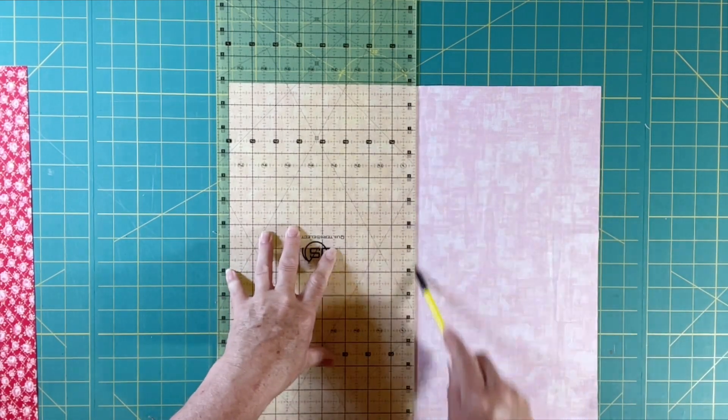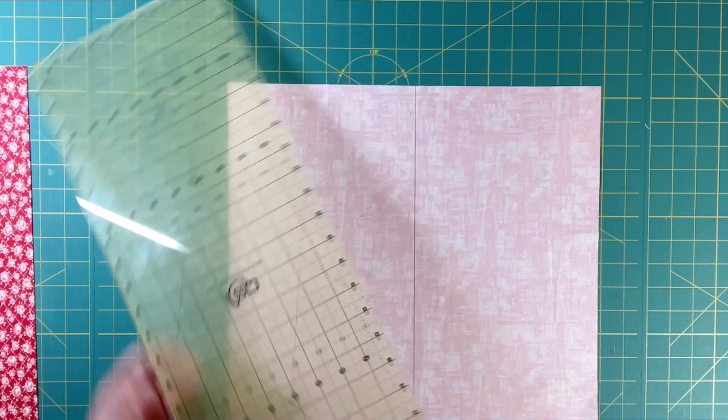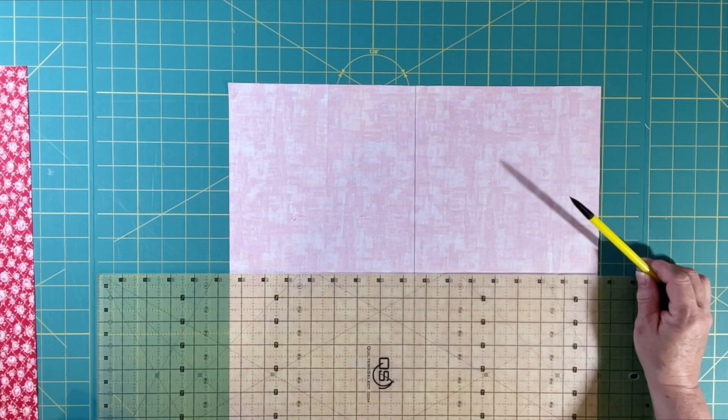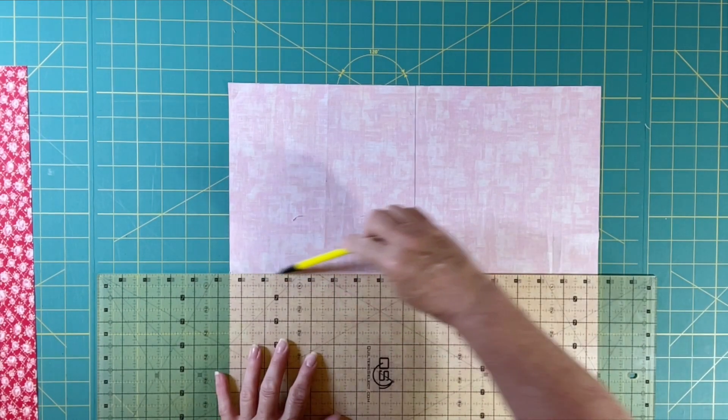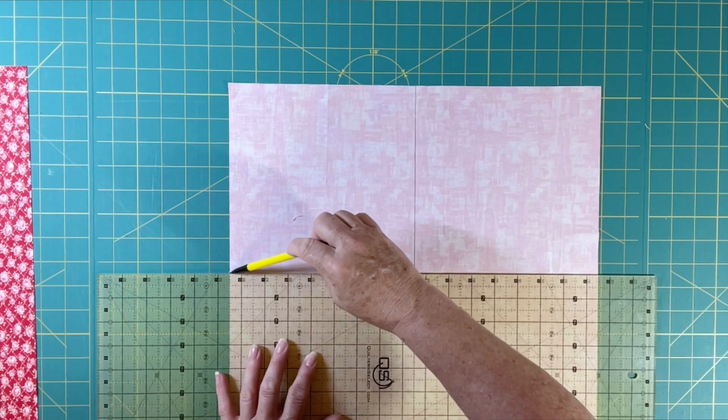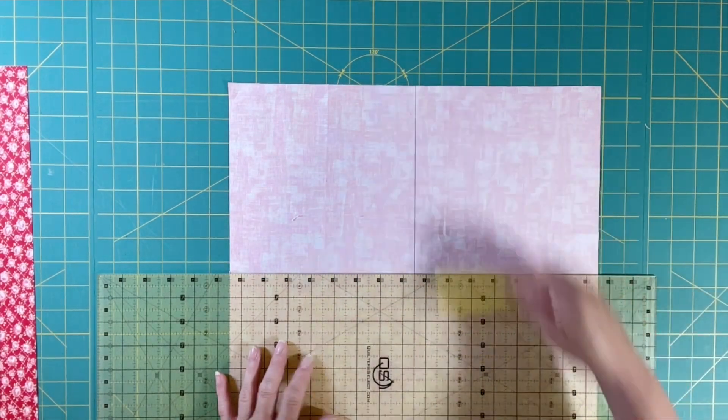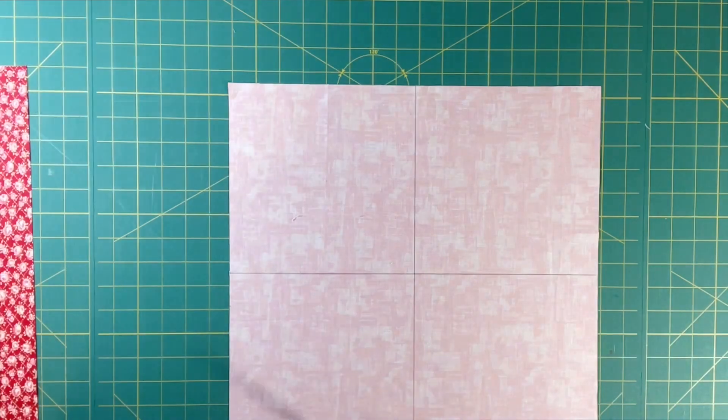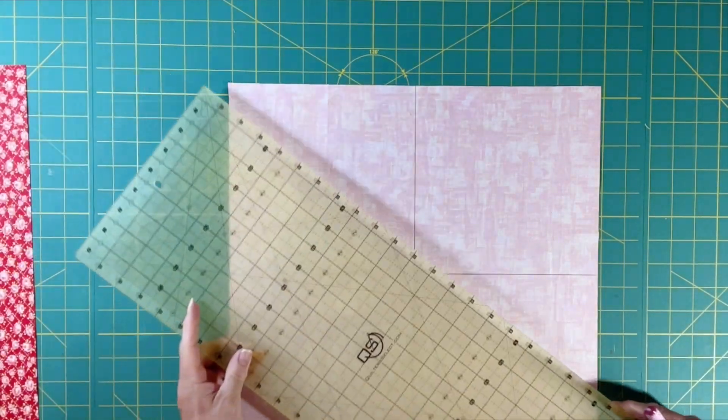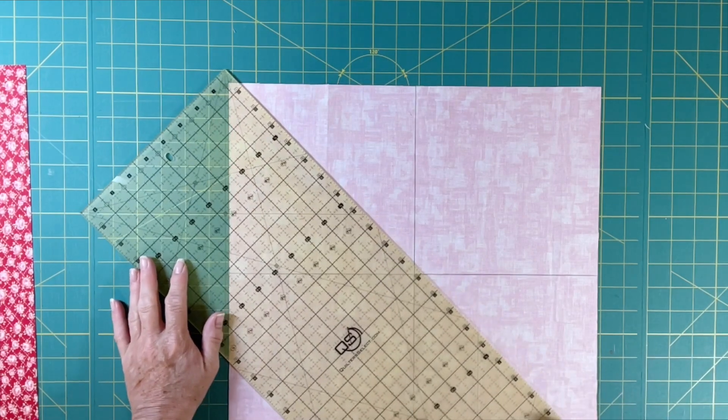These two markings are going to be a different color from the rest of them. So you have one horizontal right through the center at the eight inch mark and one vertical. The rest will be diagonal, so just go from one corner to the next.